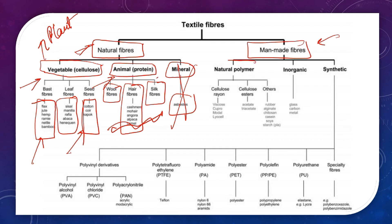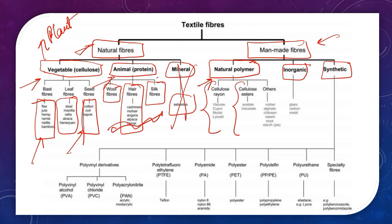Man-made fibers are further classified depending on how they are formed. The first type is natural polymers — these are fibers made from natural fibers by some modification. For example, we have vegetable cellulose-based fiber which is a natural fiber. If we do some modification in the cellulose, we get a natural polymer-based man-made fiber. The first one is cellulose rayon. Next one is cellulose ester. These are basically regenerated cellulose-based natural polymer man-made fibers. Inorganic man-made fibers include glass, carbon, and metal — these are not in use in the textile industry but in different industries. Synthetic fibers are those fibers made from non-fibrous materials or from non-renewable sources of energy.